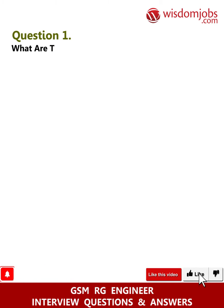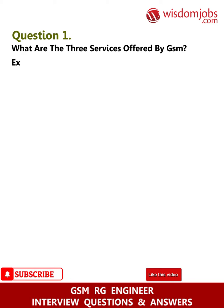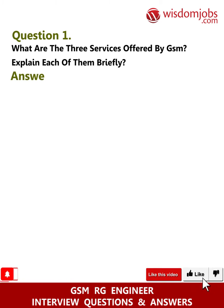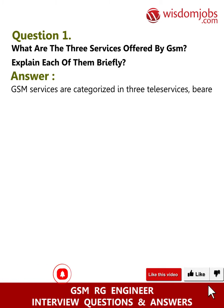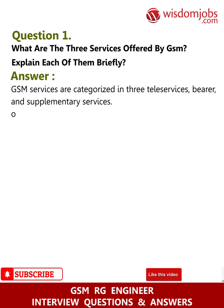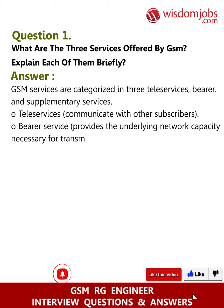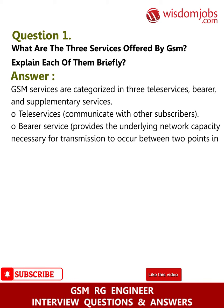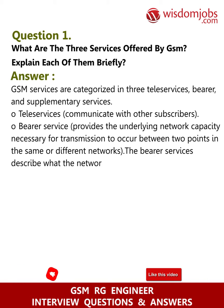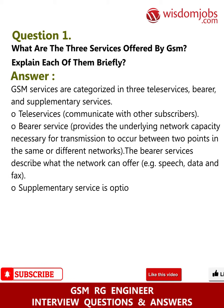Question 1: What are the three services offered by GSM? Explain each of them briefly. GSM services are categorized into three: tele services, bearer services, and supplementary services. Tele services communicate with other subscribers. Bearer service provides the underlying network capacity necessary for transmission to occur between two points in the same or different networks — for example, speech, data, and fax.